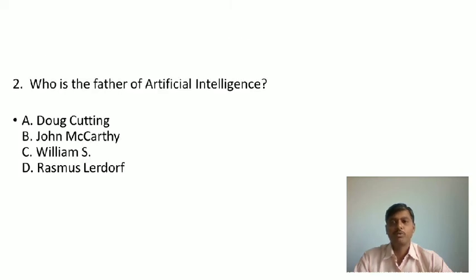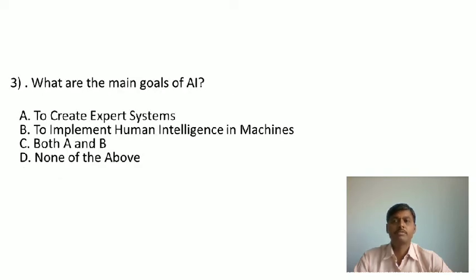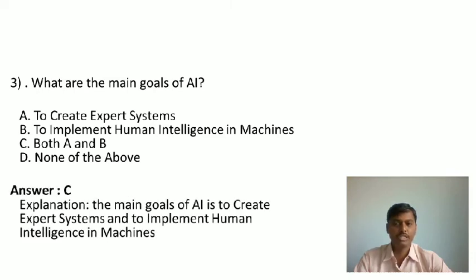Second MCQ: Who is the father of artificial intelligence? Answer B — the father of artificial intelligence is John McCarthy. Third MCQ: What are the main goals of artificial intelligence? A. To create expert systems. B. To implement human intelligence in machines. C. Both A and B. D. None of the above. Answer is C — the main goals of artificial intelligence are to create expert systems and to implement human intelligence in machines.